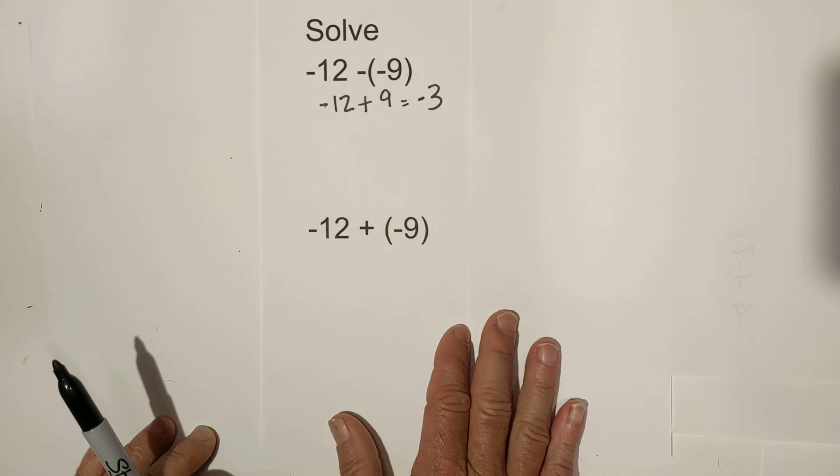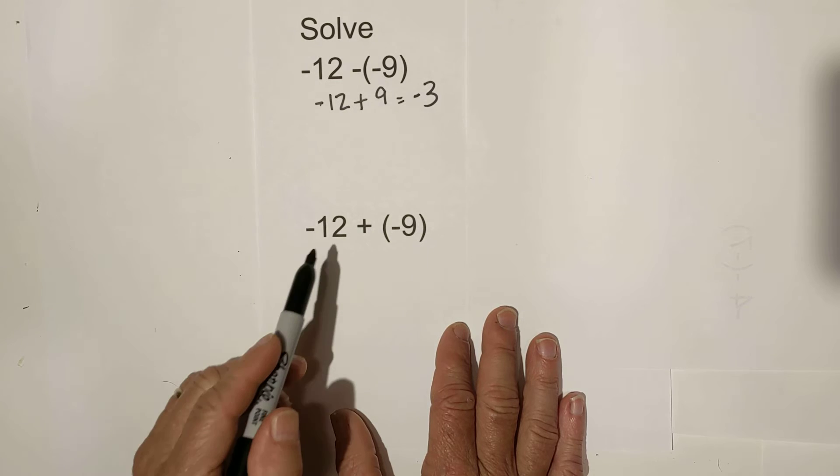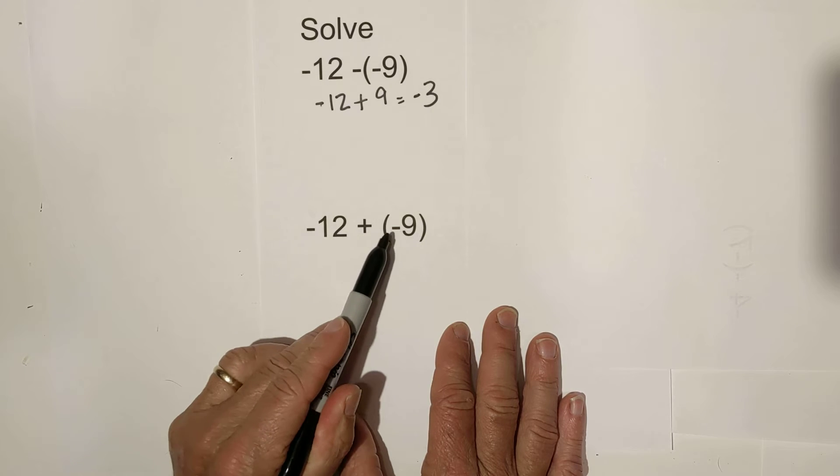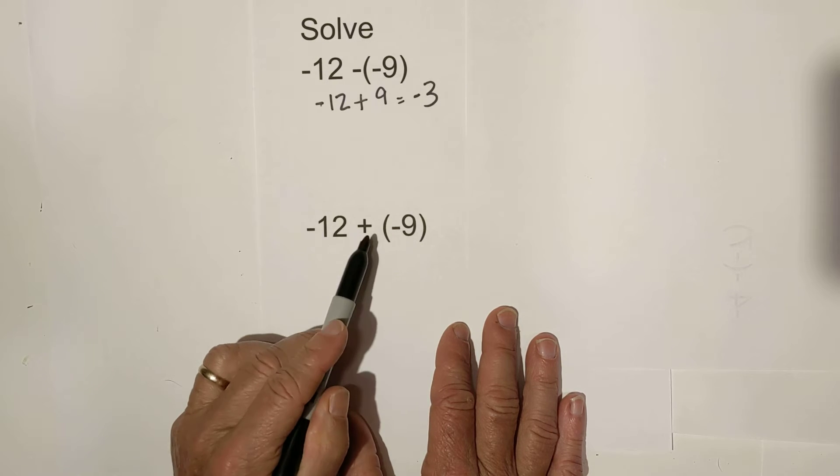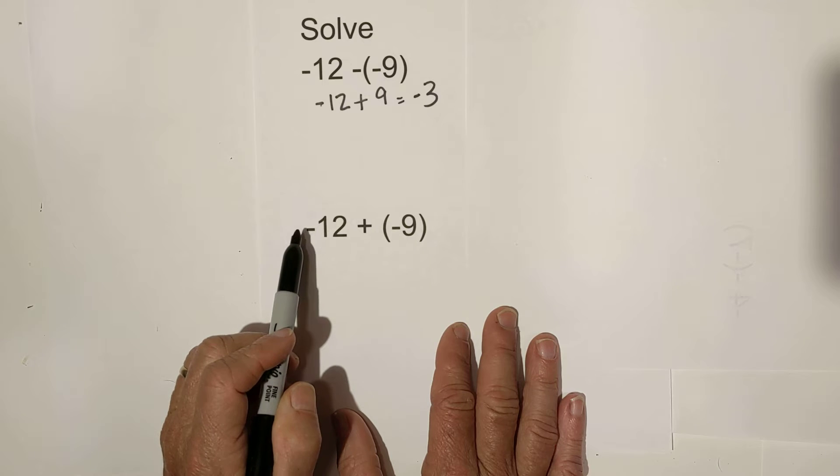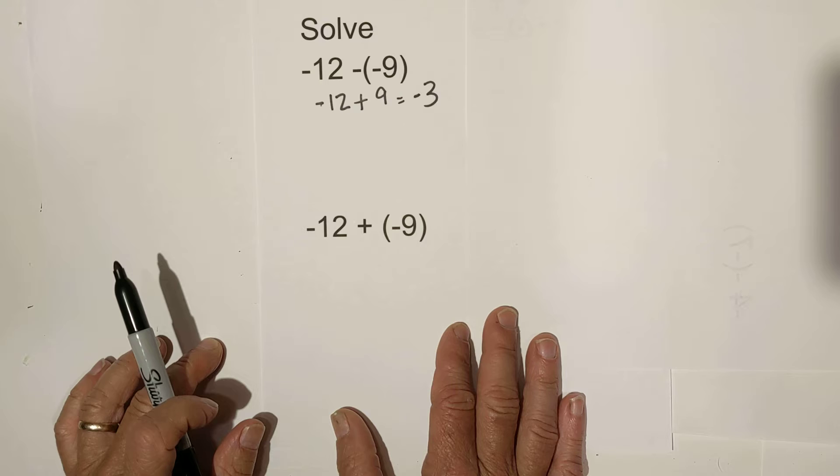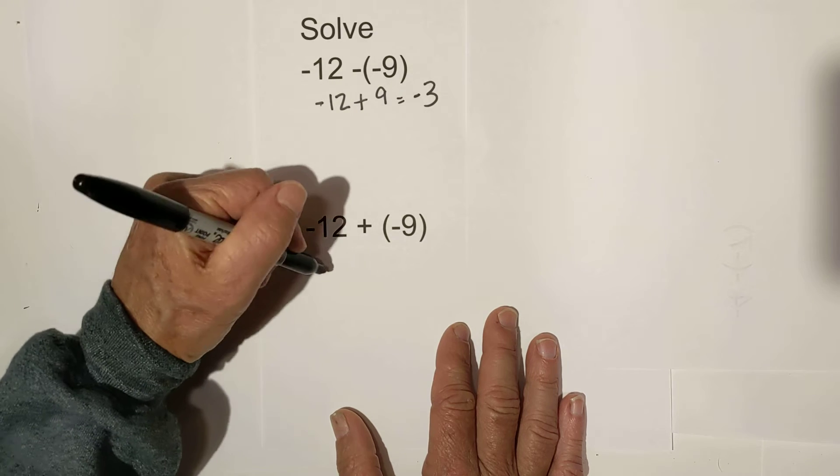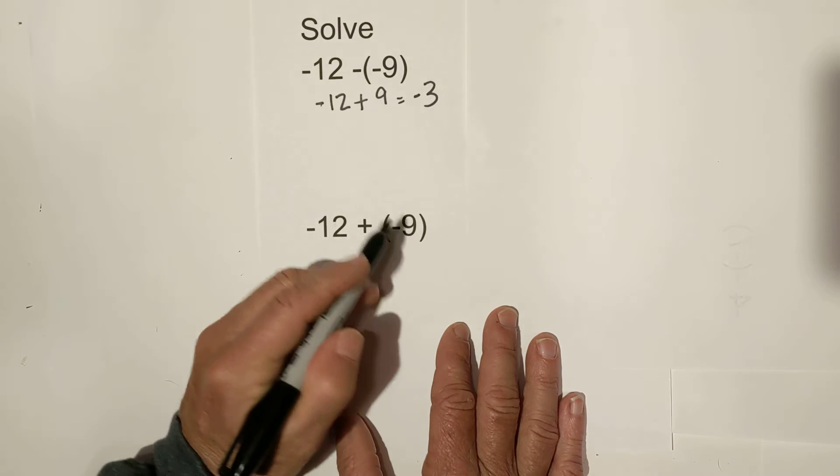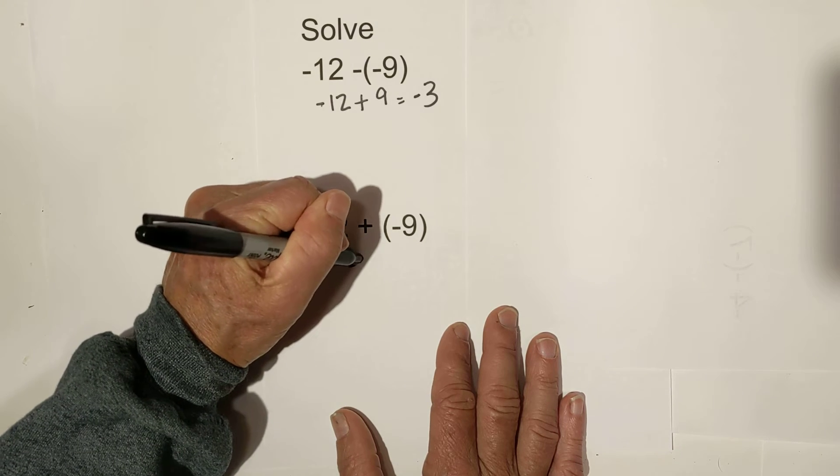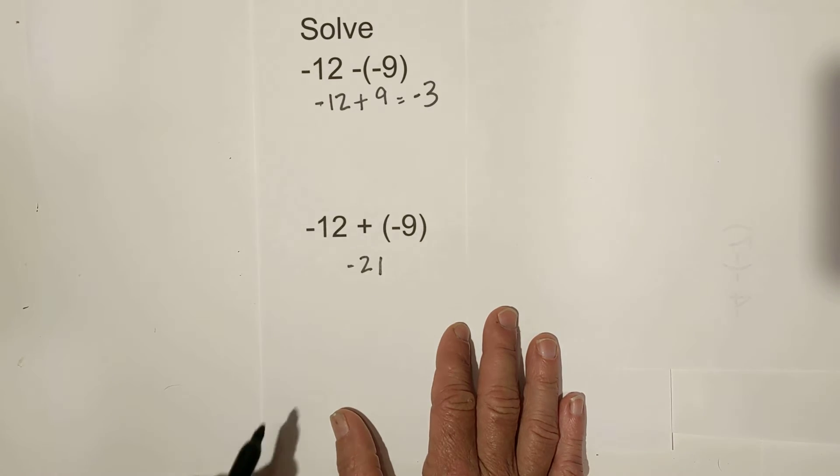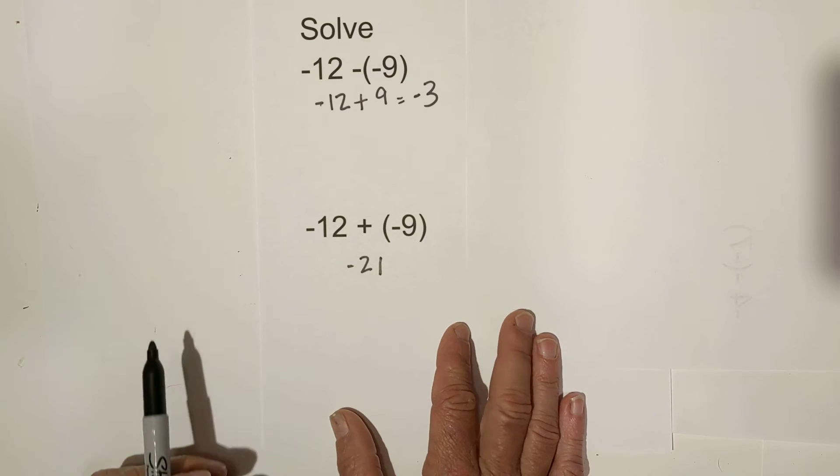Now we have another problem right below. It looks the same, except this time we have negative 12 plus negative 9. Whenever you add two negatives, you just add and keep the sign, which is negative. So we have negative 12 and negative 9 is negative 21. It's just like you add them and keep the negative sign.